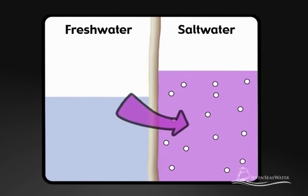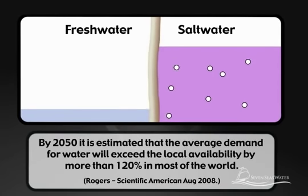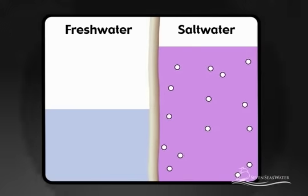In nature, the direction of flow through the membrane is from a less concentrated solution, such as freshwater, to a more concentrated solution, such as seawater, until equilibrium is reached.